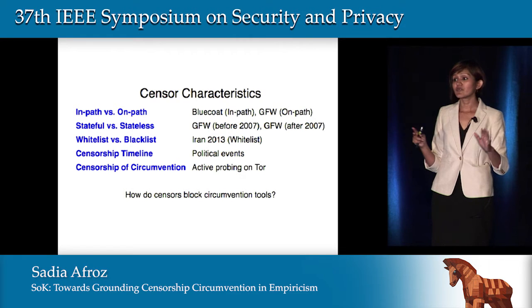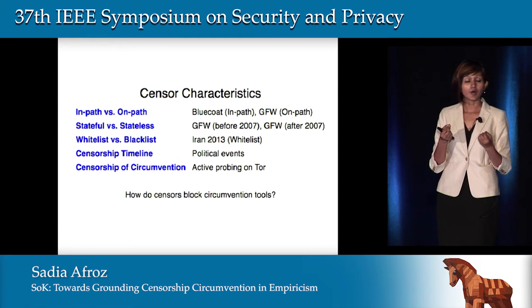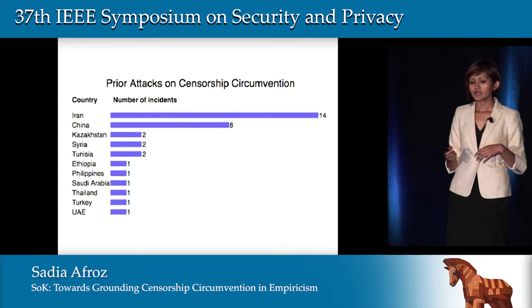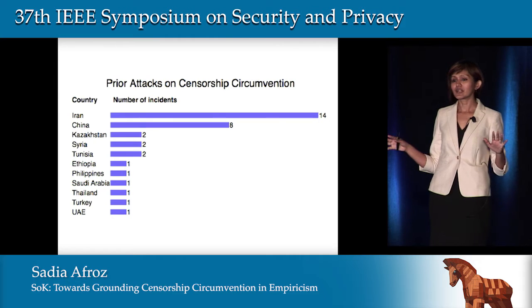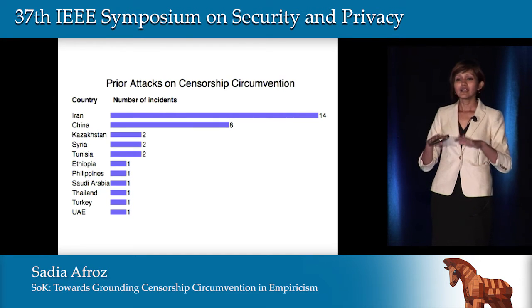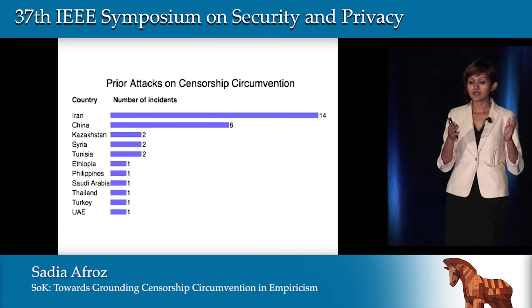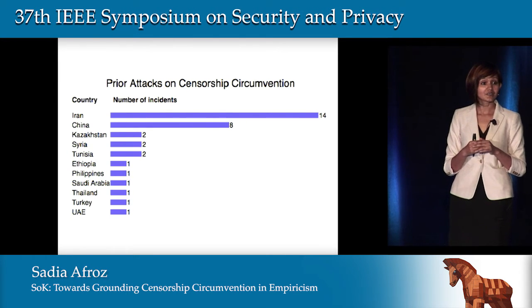In all these measurement papers, we found only four that look at censorship of circumvention tools — three focus on how China blocks Tor, and one looks at leaked logs of a Bluecoat device deployed in Syria in 2011, which was used to block Tor. To get a better picture, we downloaded thousands of Tor bug reports and blog posts and used a machine learning approach to identify events when Tor was blocked by some country. We found 34 Tor blocking incidents, the majority in Iran and China, along with nine other countries that blocked Tor once or twice.